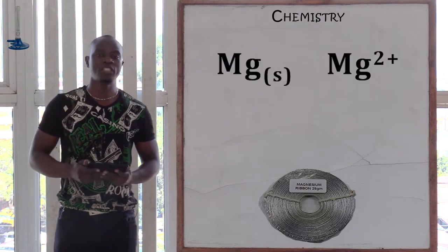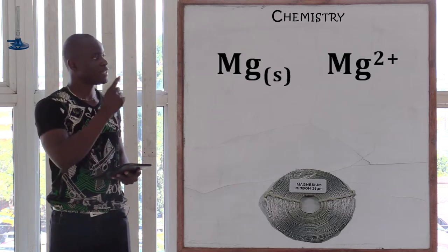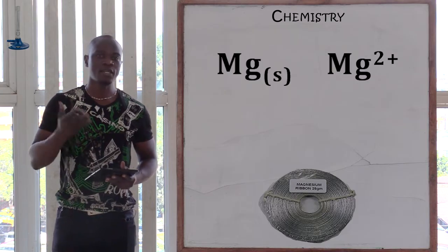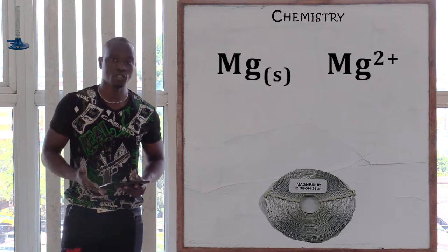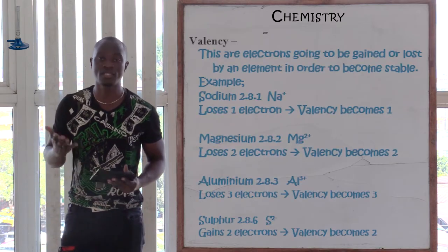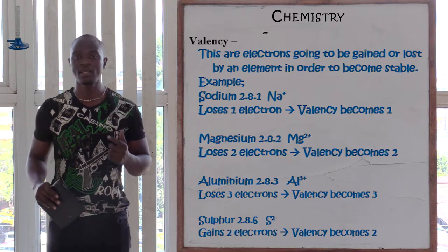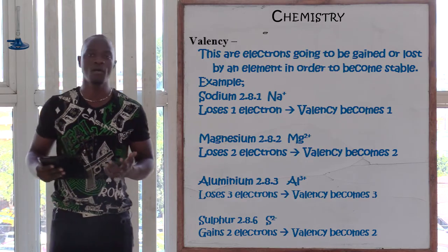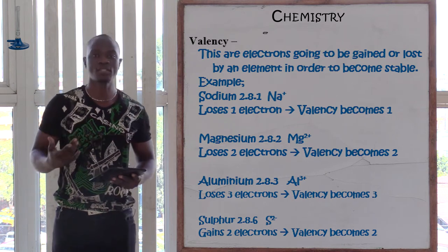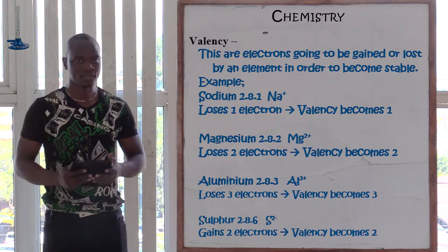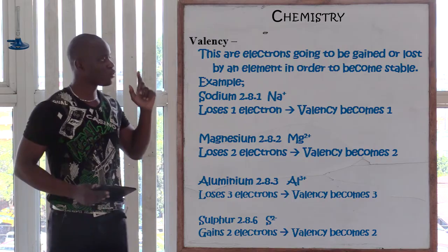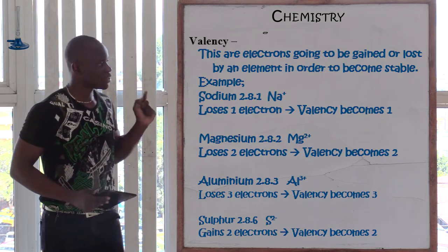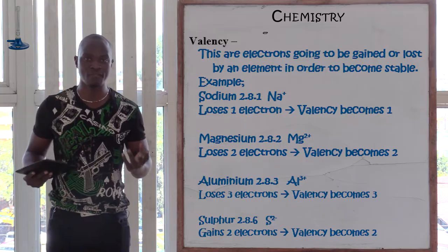Now since we have mentioned charge, let's look at this. Why should we write sodium positive? Why should magnesium have 2 positive? This brings us to the definition of valency. Valency means the electrons going to be gained or lost by an atom or an element. Since sodium is going to lose one electron, the valency of sodium is one. Since magnesium is going to lose two electrons, the valency of magnesium is two.